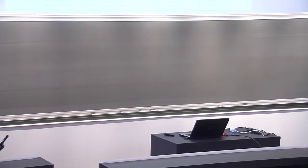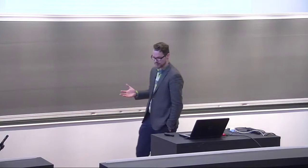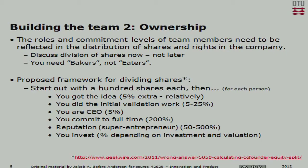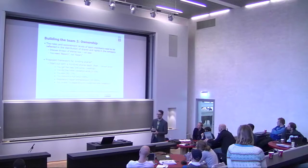The next part is actually distributing the ownership of the company — for instance, if you do a limited company among you. There are a lot of ways of doing this, but as one article said, the only wrong way of doing it is dividing it 50-50 or equally among you, because that doesn't reflect the different responsibilities. Maybe one person is CEO, maybe one commits 100%, another commits 25% — that needs to be accounted for in the shares held by different persons.